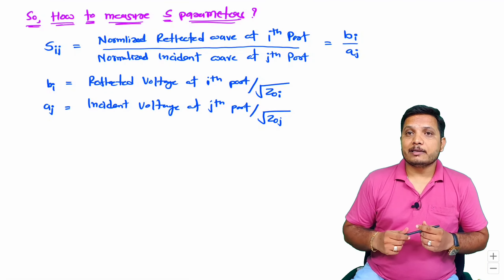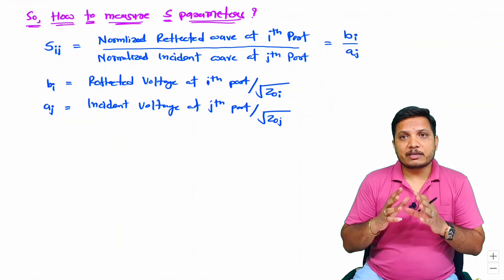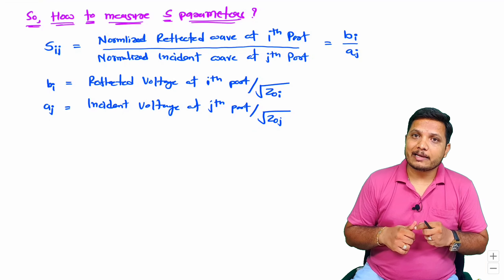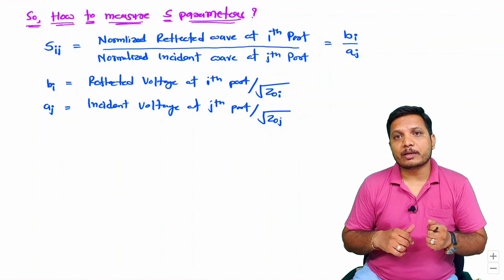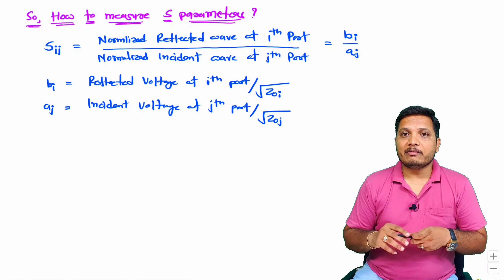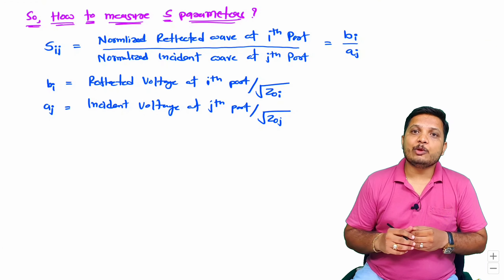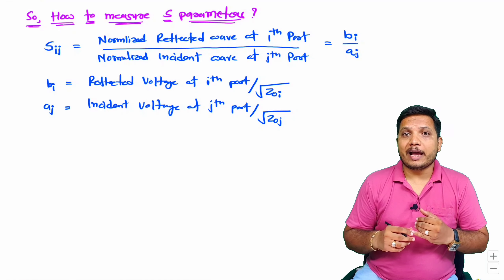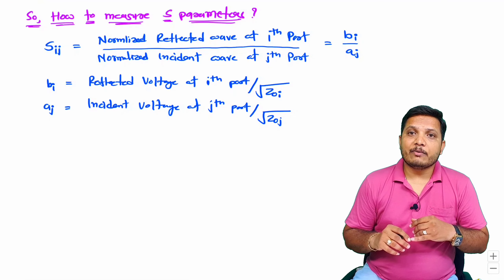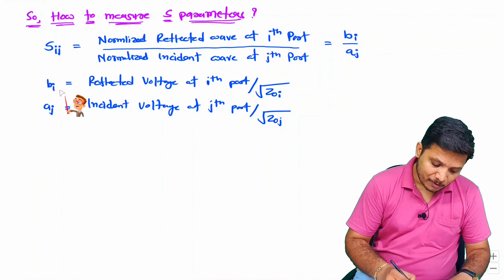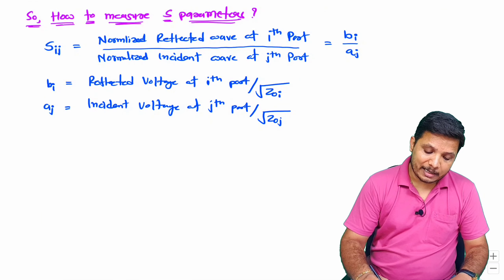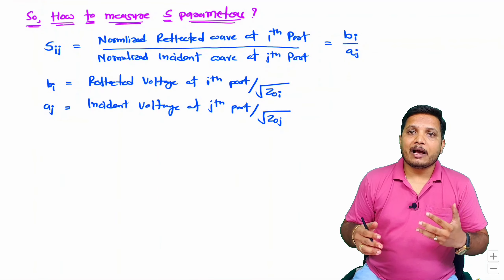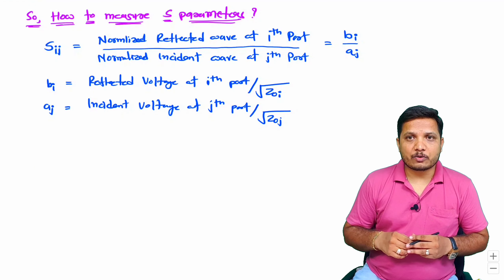So this is how we measure scattering parameters. Microwave antennas and RF circuits are analyzed using scattering parameters, as we cannot analyze those components using Y, Z, ABCD, or H parameters. The key notation is that S_ij is the normalized reflected wave at the ith port divided by the normalized incident wave at the jth port, where normalization is done by dividing by the square root of the characteristic impedance at that particular port. In the next few videos I'll explain some components as well, which will give you proper understanding of scattering parameters. Thank you for watching.